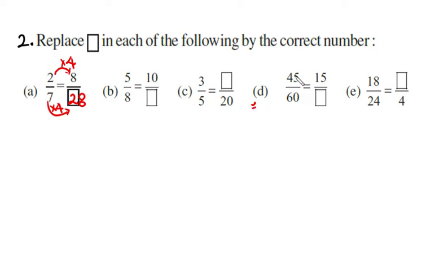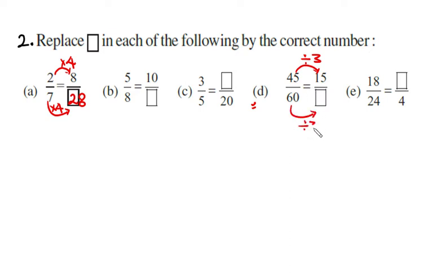Part D: forty-five sixtieths is equivalent to fifteen over box. To go from 45 to 15 in the numerator, we use division — dividing by three. Because these are equivalent fractions, we also divide the denominator 60 by three, giving us 20. So in part D, the box value is 20.